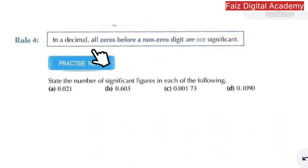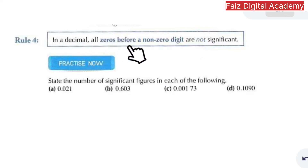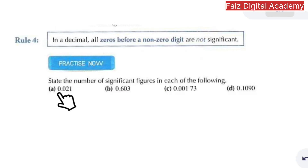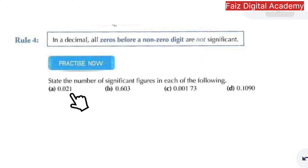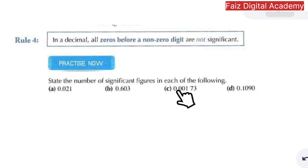The fourth rule is: in a decimal, all zeros before a non-zero digit are not significant. For example, 0.021 — the zero before the non-zero digit is not significant, so there are only two significant figures: 2 and 1. Similarly, 0.603 has three significant figures, and in part c, there are again three significant figures.